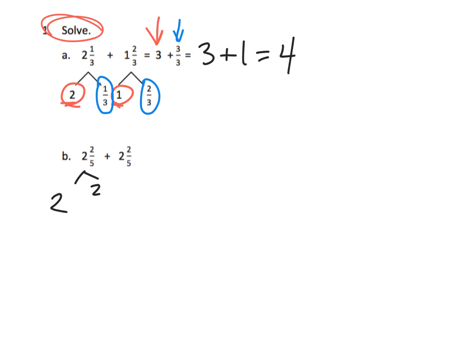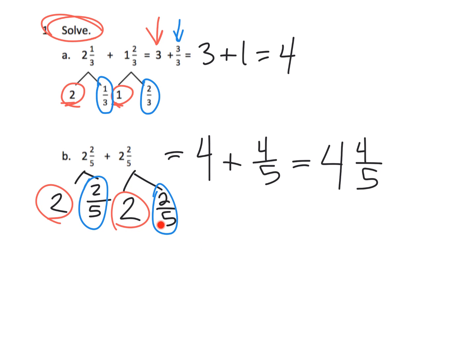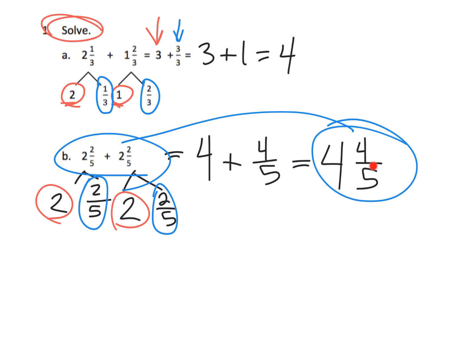So two and two fifths plus another two and two fifths — we can add the whole numbers, two and two, that gives us four, and then we can add two fifths plus two fifths, that gives us four fifths, so our answer is four and four fifths. Ultimately, we're just making it explicit at this point. We're going to want students to look at the problem and go straight to at least some sort of mixed number, possibly with an improper fraction that needs further simplifying. All of this intermediary step is just to make math make sense on our road towards that standard algorithm.